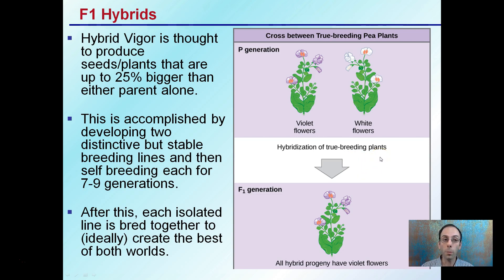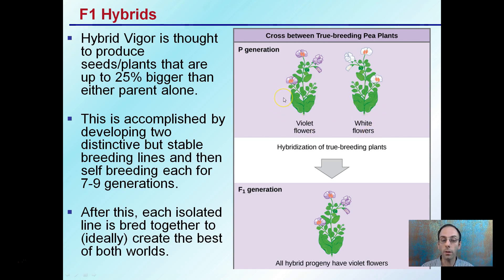Now we get into F1 hybrids and hybrid vigor. It's thought to produce seeds or plants that are 25% bigger than either parent alone. How is an F1 hybrid accomplished? By developing two distinctly stable breeding lines — in this example, violet and white flowers. We would self-cross each of these for about seven to nine generations. After isolating these two lines, we breed them together to ideally create the best of both worlds in the resulting F1 offspring.